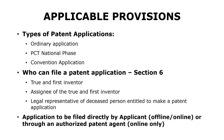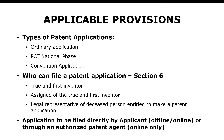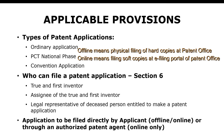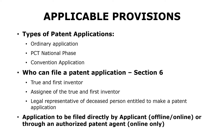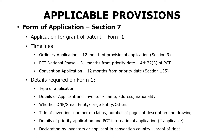The patent application can be filed in offline or online mode. If the application is being filed directly by the applicant, he can file it in an offline mode or an online mode, provided he has a digital signature to sign the application. Or the patent application could also be filed through an authorized patent agent, but that patent agent can only file the application in the online mode.